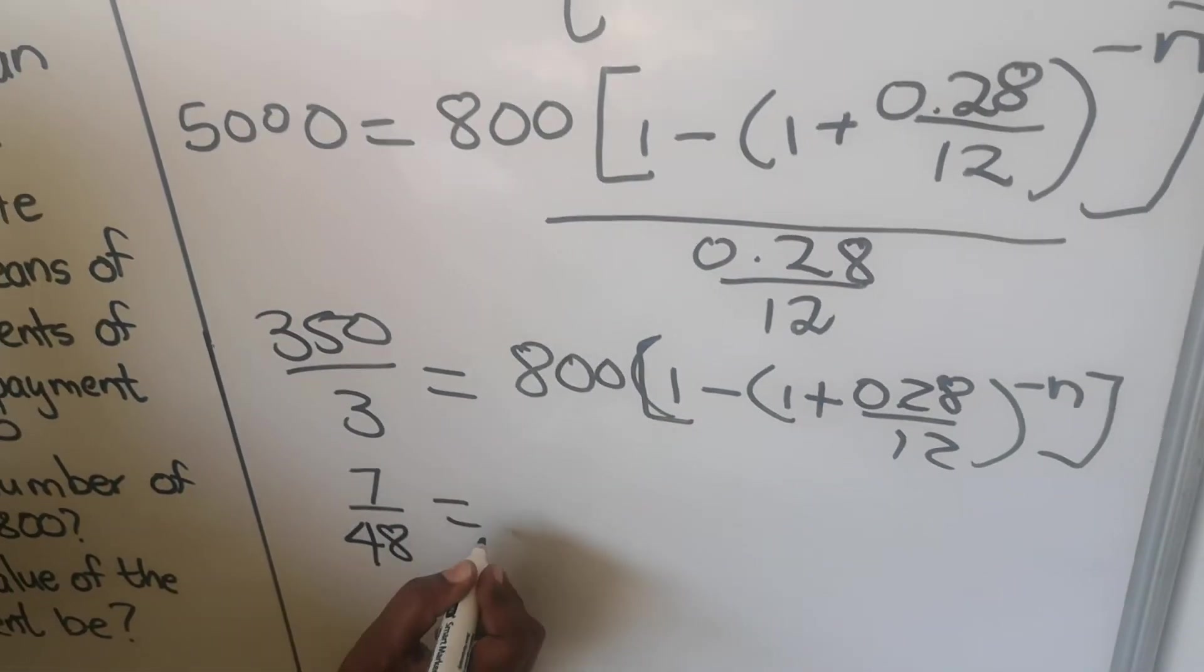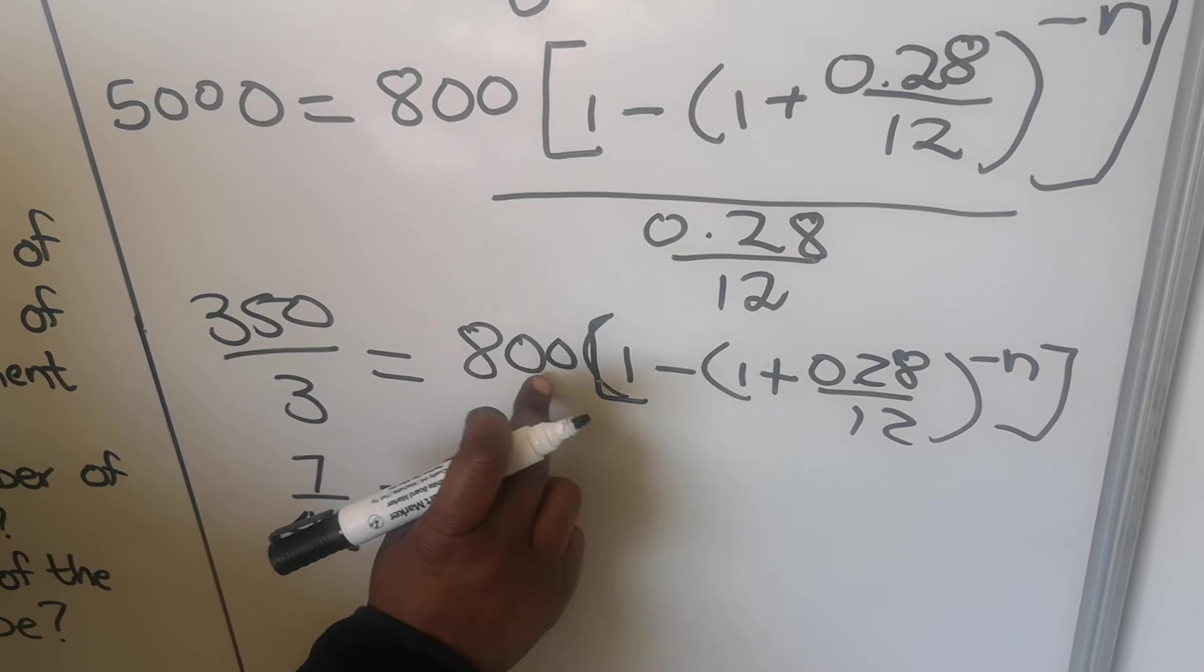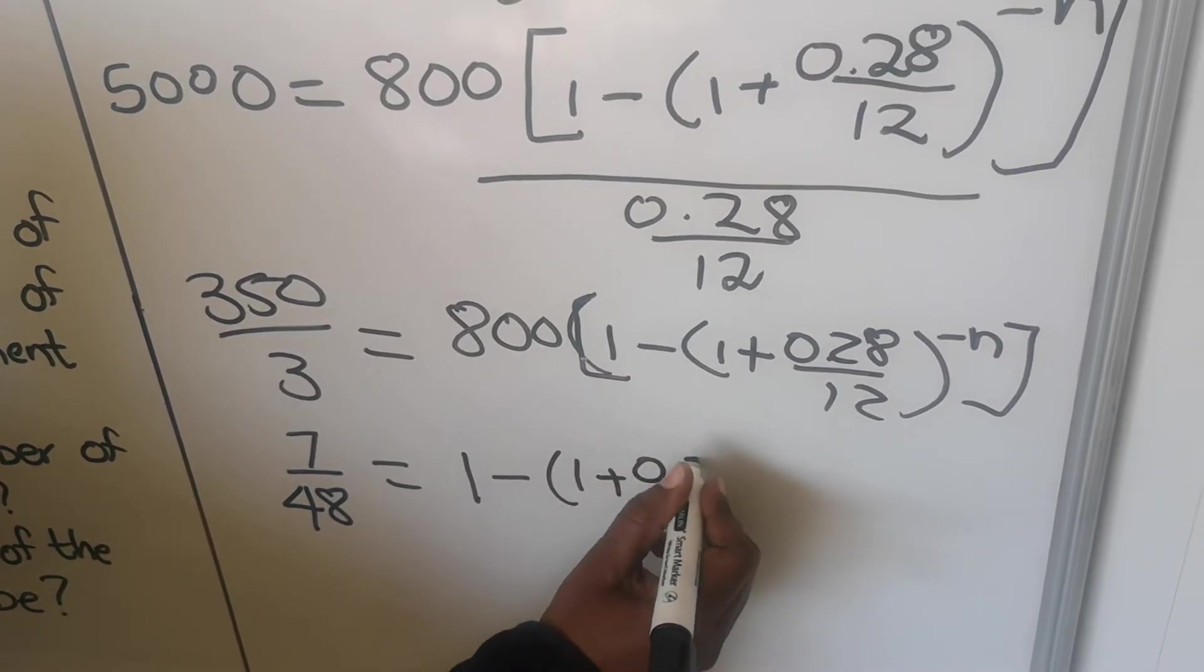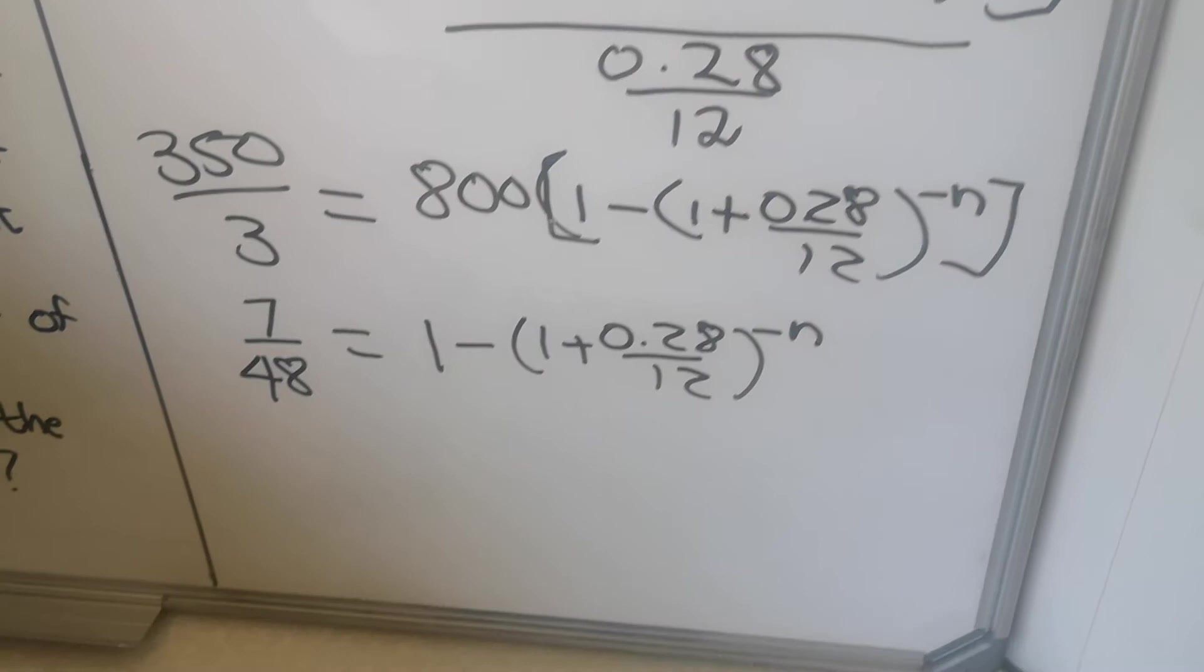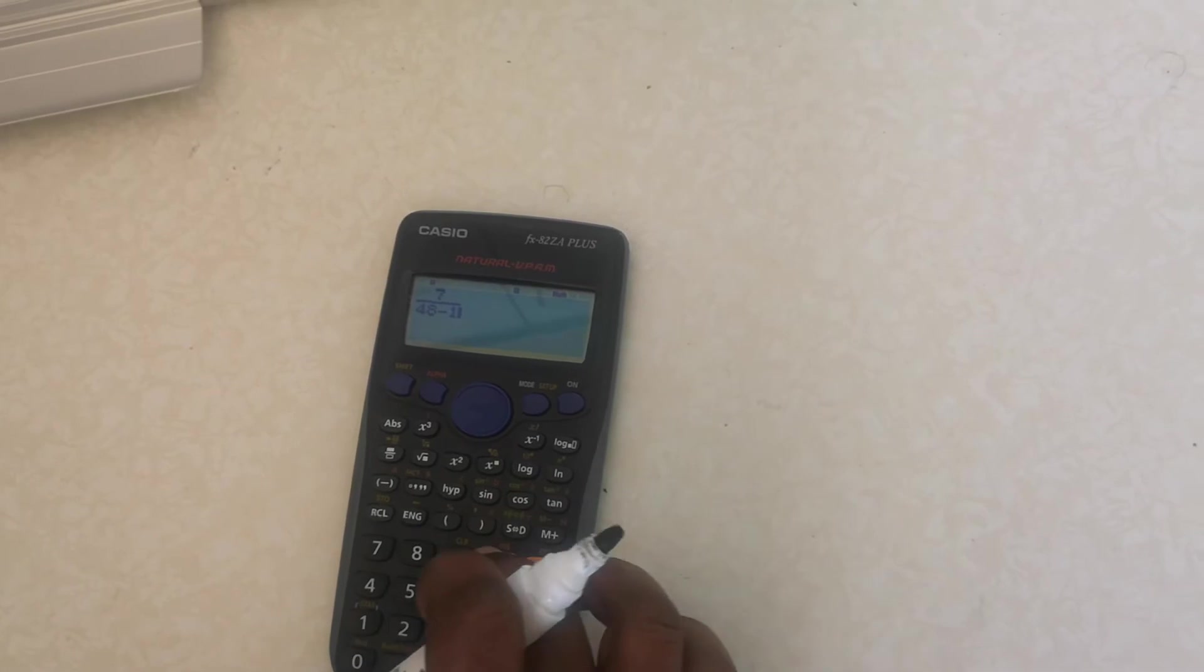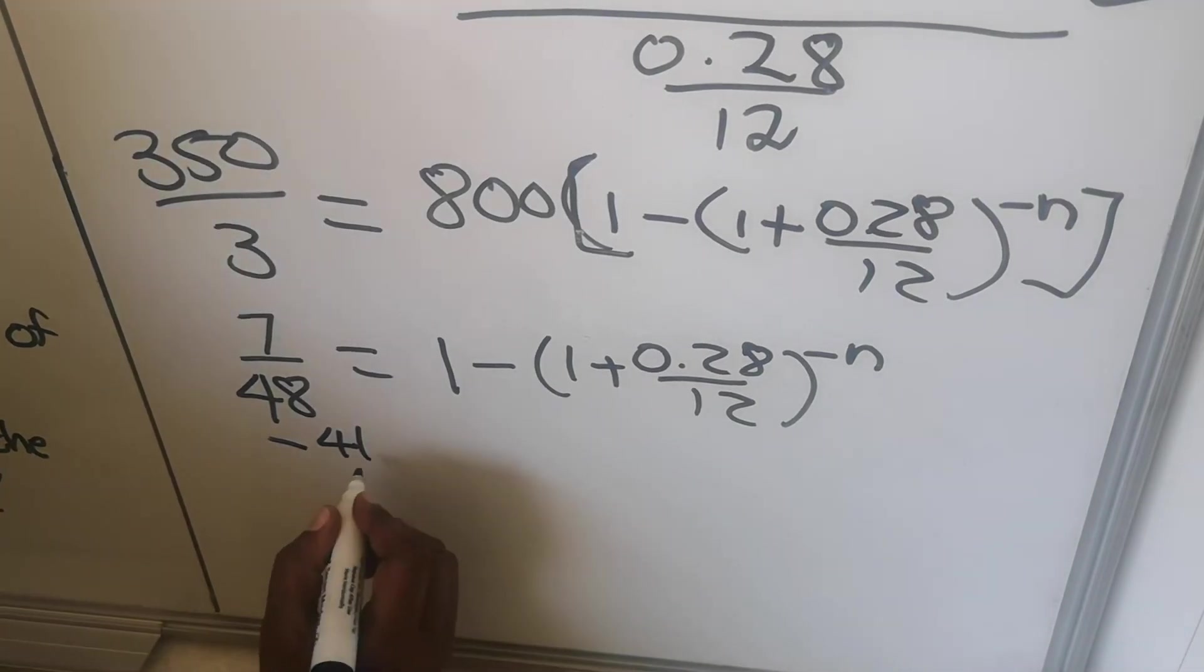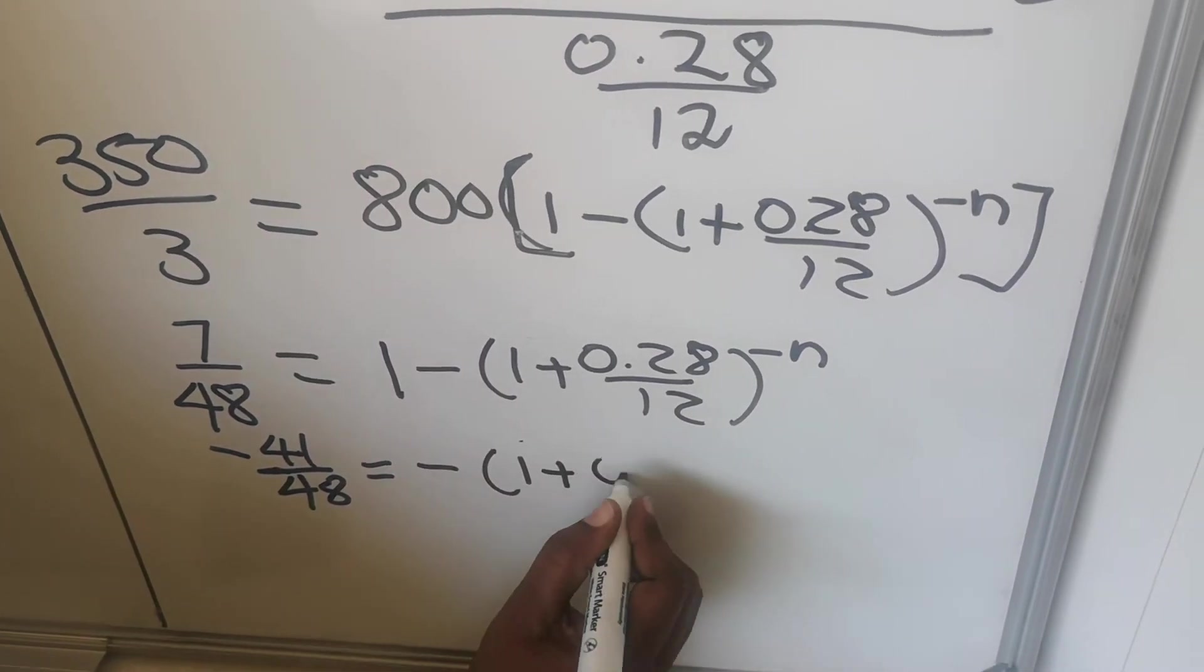This equals to - I've divided that, I'm left with a 1. I don't need that bracket anymore because the bracket was for multiplying the 800. So I'm left with 1 minus 1 plus 0.28 over 12 to the power minus n. Take the 1 to the other side, then it will be 7 over 48 minus 1. My answer will be minus 41 over 48.